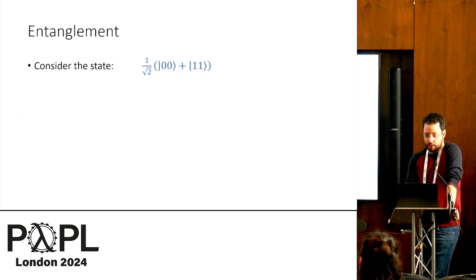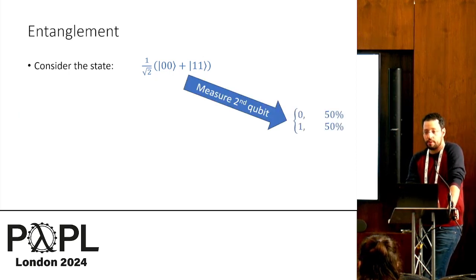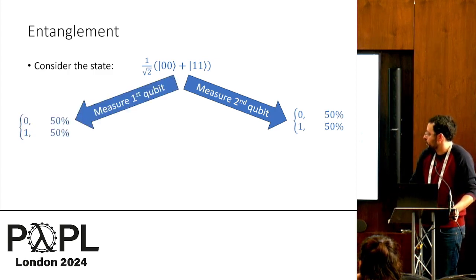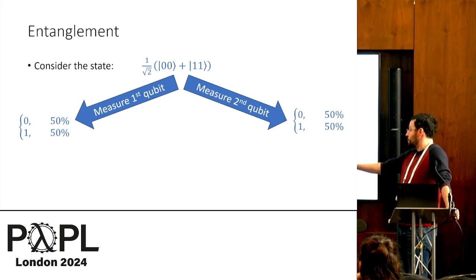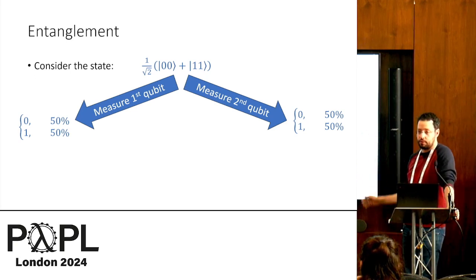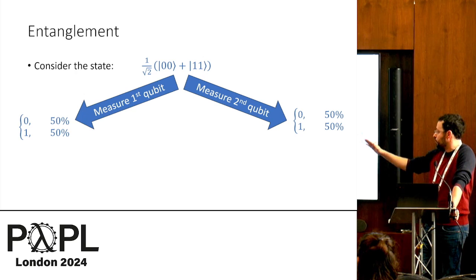Now if instead we measured the second qubit, we would get the same probability distribution. But if we measured, let's say, the first qubit, and then we got zero, and then we collapse the state, and then we measure the second qubit, we're always going to get zero. So these two qubits are entangled.